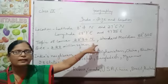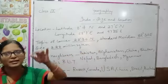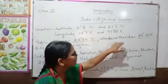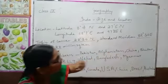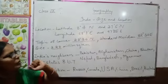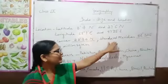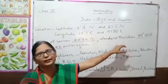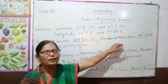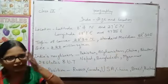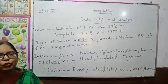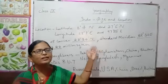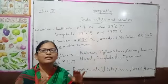In India, we have an imaginary line called the Standard Meridian. The Standard Meridian is 82 degree 30 East. Why? It is a very simple reason. In India, we have a large area, and we have a standard time.